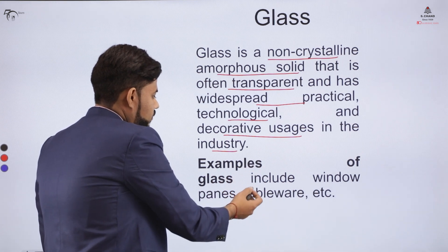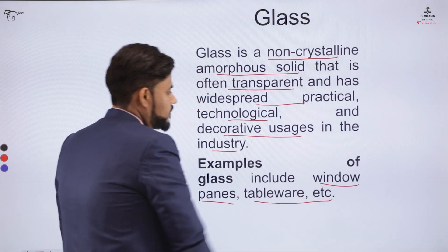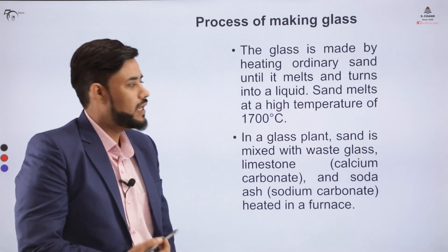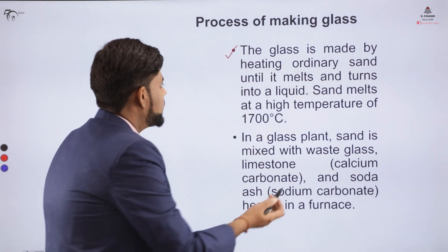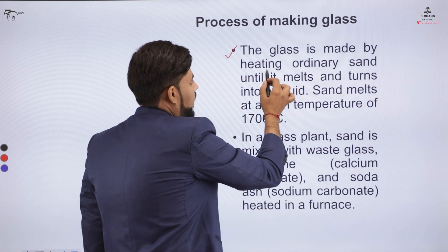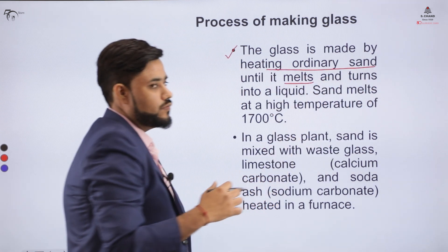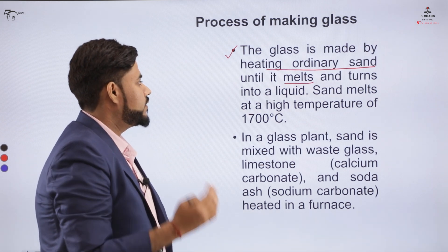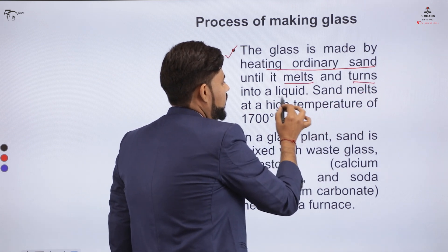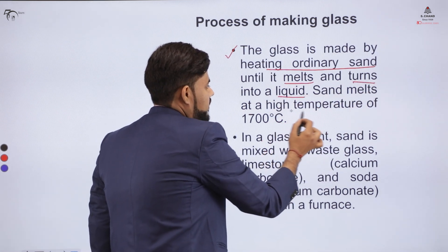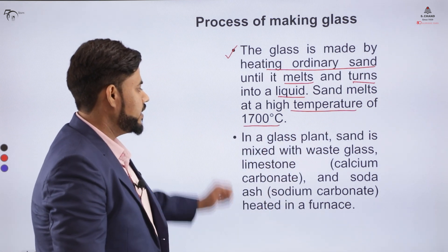Glass can be used in window panes or for tablewares. The process of making glass involves heating. The glass is primarily made by heating ordinary sand until it melts. We generally heat the sand and after heating, the sand melts and turns into the liquid state. Sand melts at a higher temperature in the range of 1700 degrees Celsius.